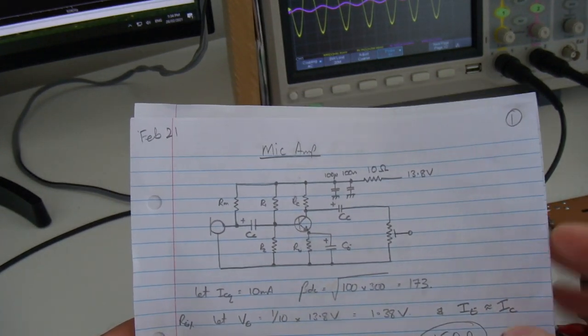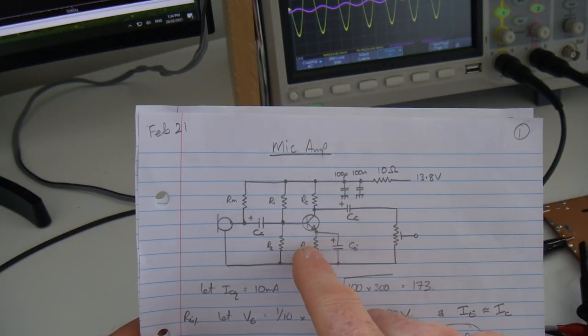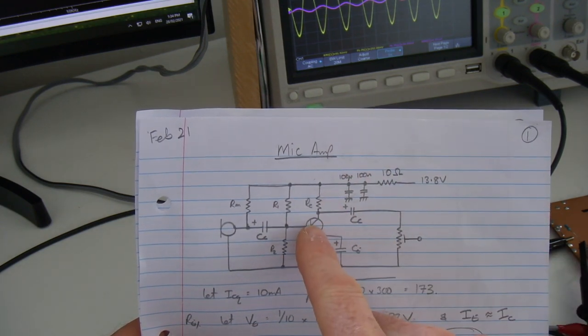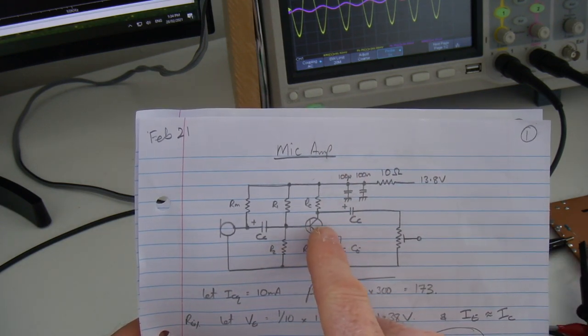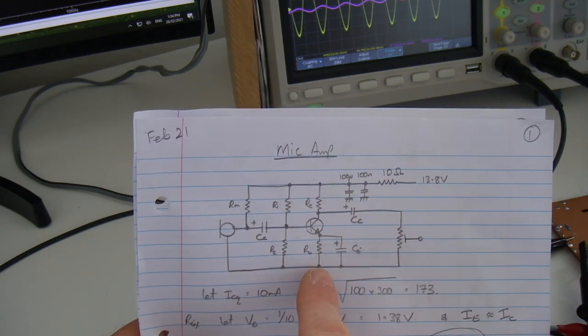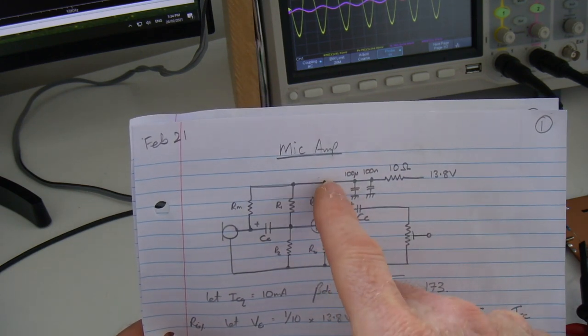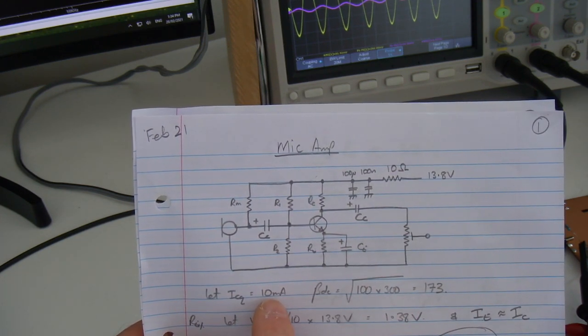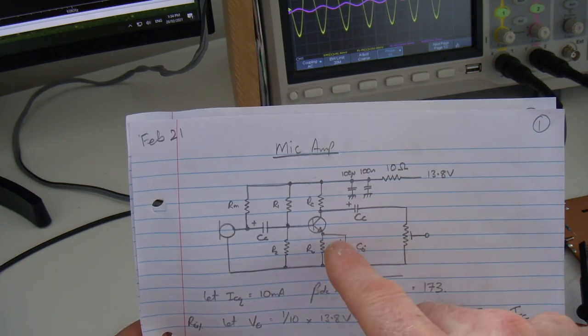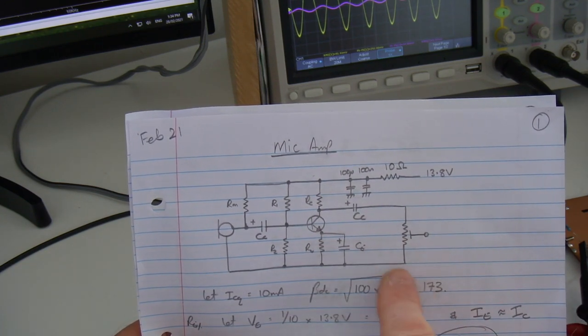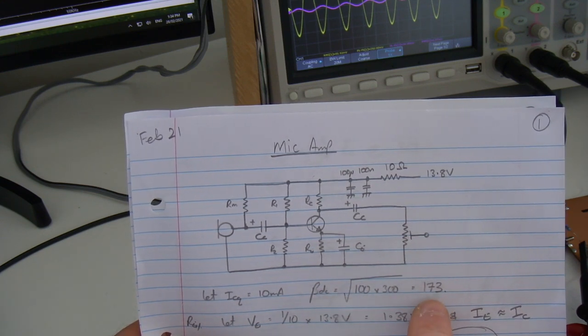So the amplifier itself is built around a common emitter amplifier using the 2N3904. What I've elected to do, per the spec sheet, is have it set up for maximum gain. I've set up for a quiescent collector current of 10 milliamps. Based on that, off the spec sheet, we get our geometric mean for the beta DC of 173, square root of the range in the spec sheet multiplied.